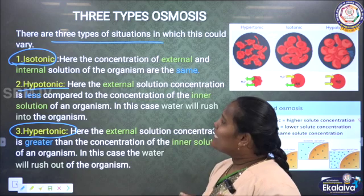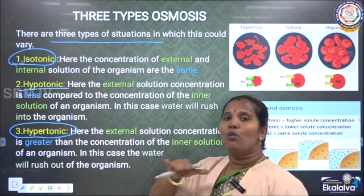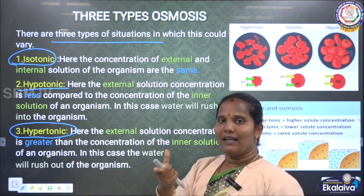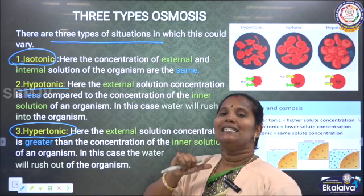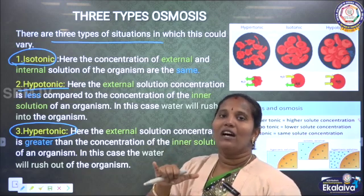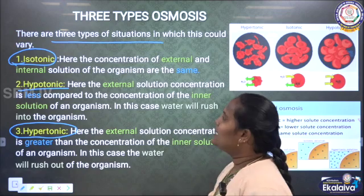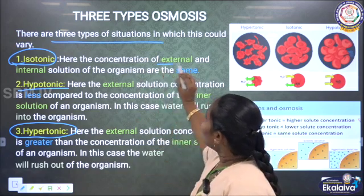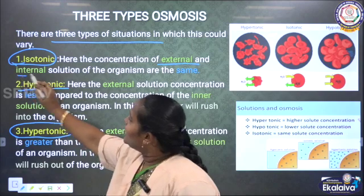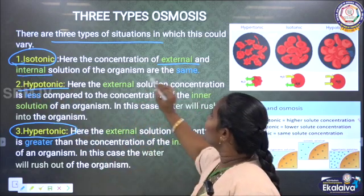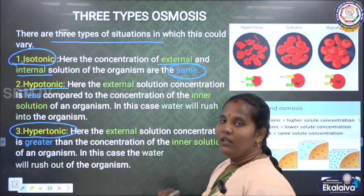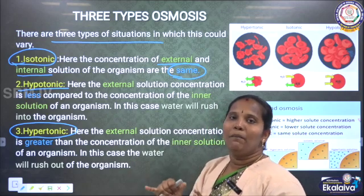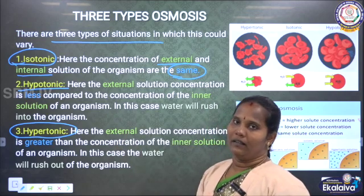What does each mean? Iso means both sides of the liquid level will be the same. If the external and internal solutions of the organism are same, it is called isotonic.